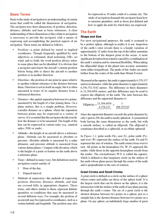The Earth's Shape and Size. For most navigational purposes, the earth is assumed to be a perfect sphere, although in reality it is not. Inspection of the earth's crust reveals a height variation of approximately 12 miles from the top of the tallest mountain to the bottom of the deepest point in the ocean. A more significant deviation from round is caused by a combination of the earth's rotation and its structural flexibility. Measured at the equator, the earth is approximately 6,378,137 meters in diameter, while the polar diameter is approximately 6,356,752.3142 meters. Since the equatorial diameter exceeds the polar diameter by only one part in 298, the earth is nearly spherical.